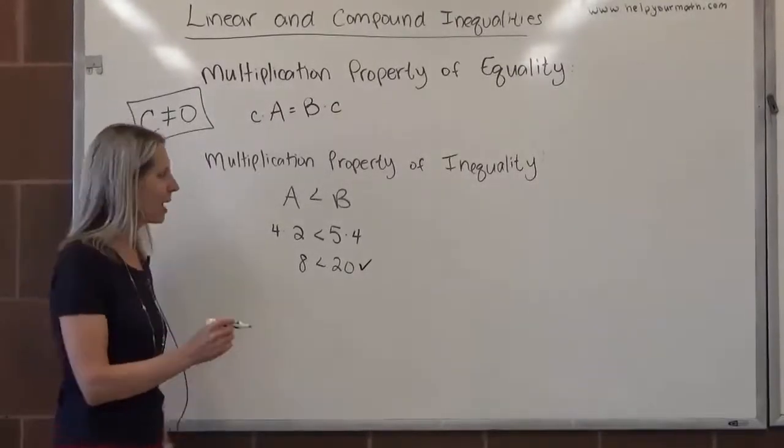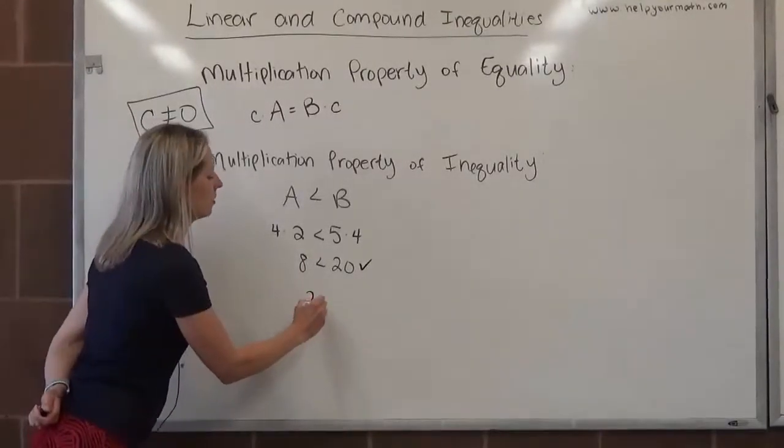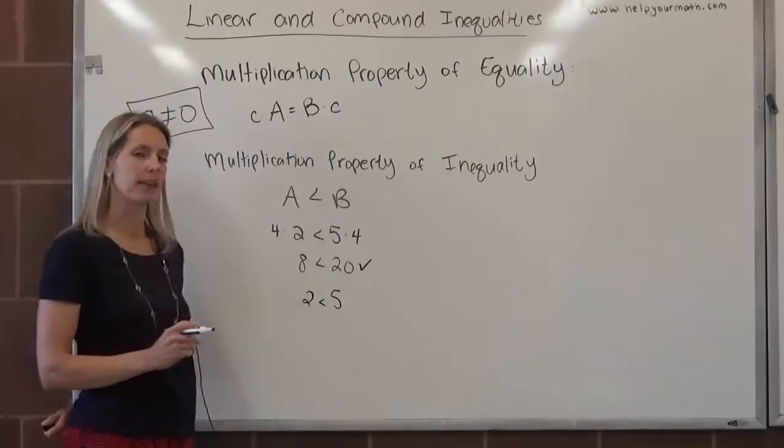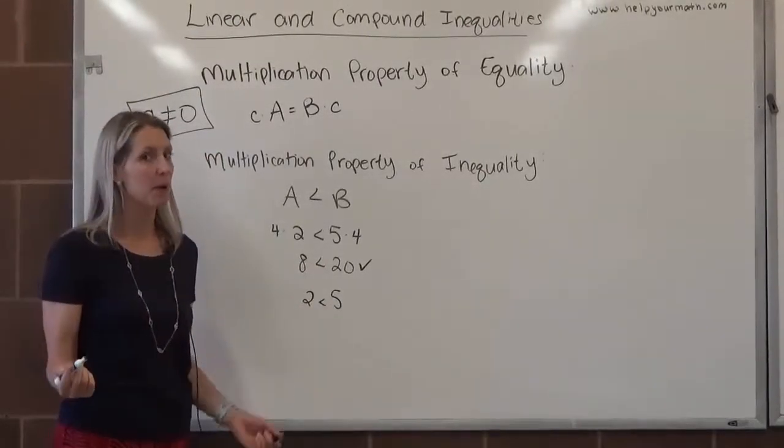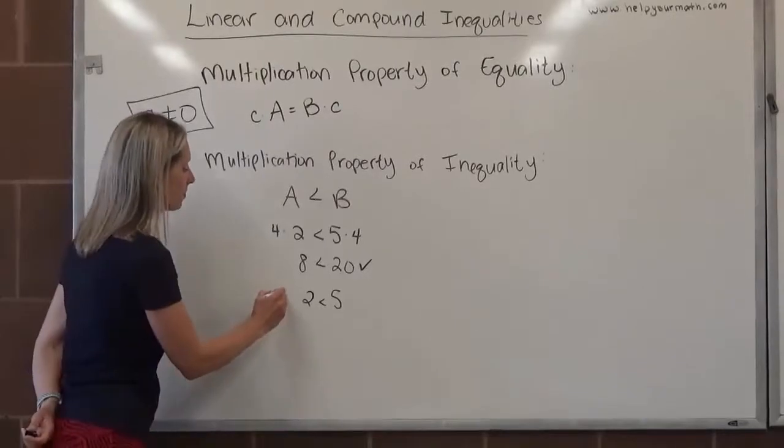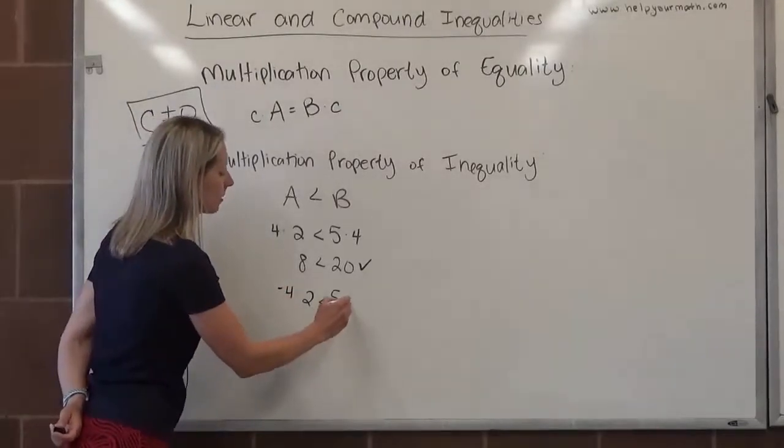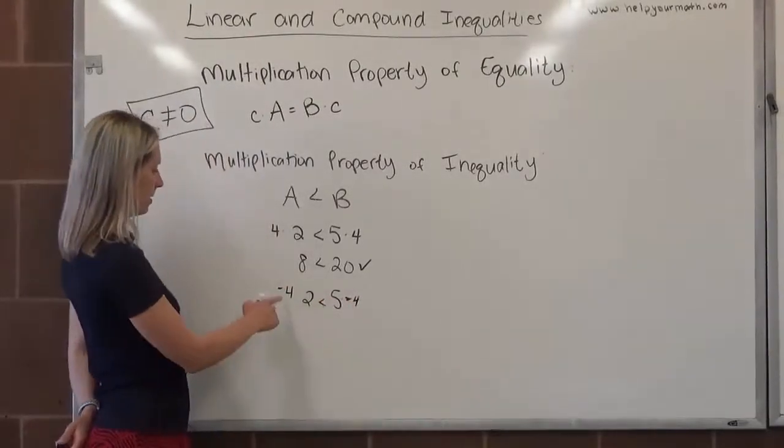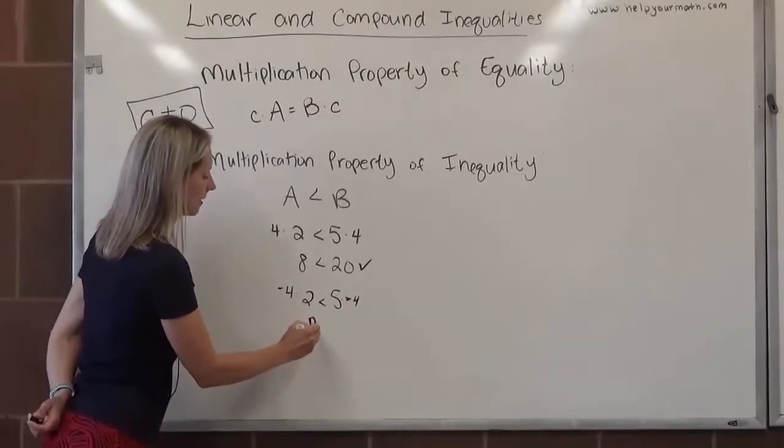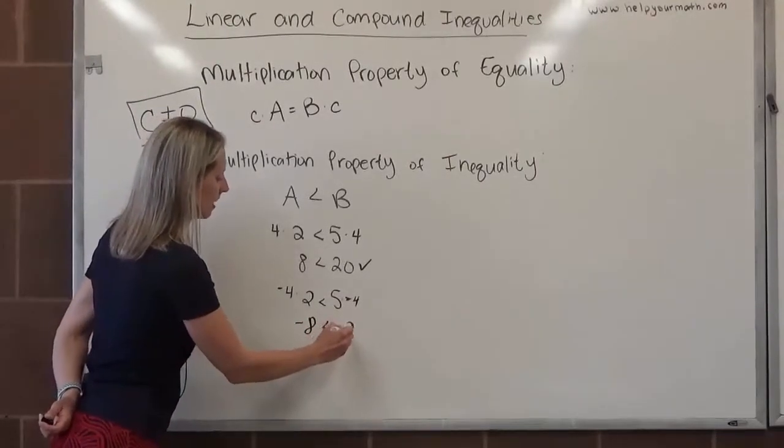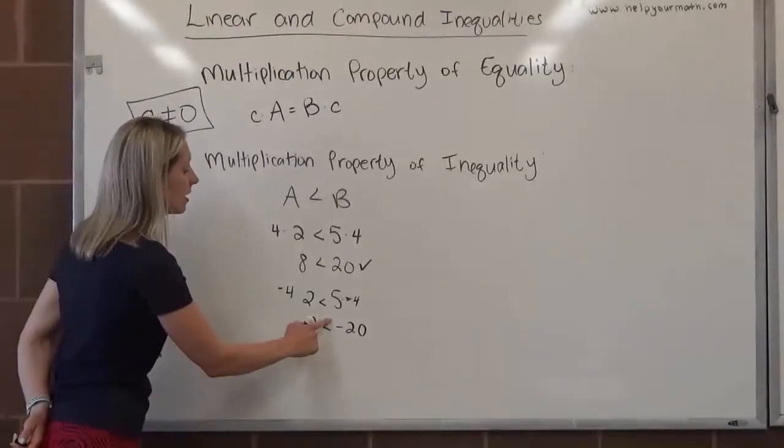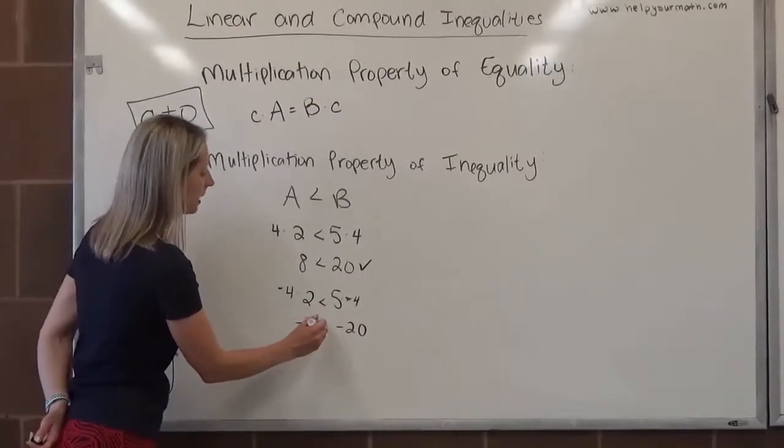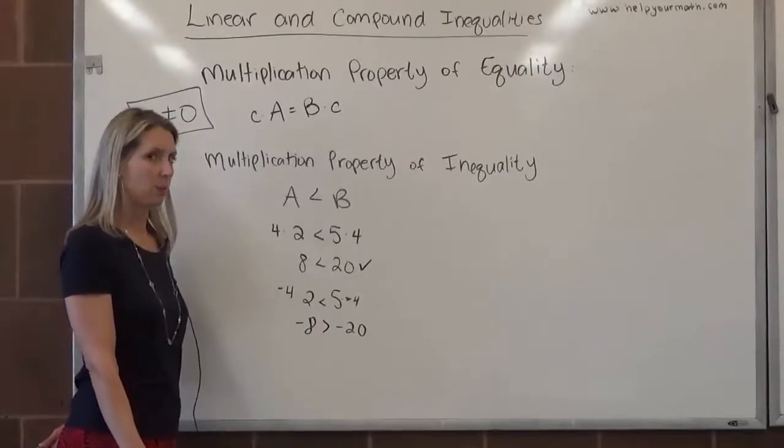Will it always hold up? I don't know. I mean, I do know, but for the sake of this video, let's pretend like I don't. All right. Two is less than five. Now this time let's multiply by negative four. What happens when we multiply both sides by negative four? We get negative eight is less than negative. Wait a minute. Negative eight is not less than negative 20. Negative eight is greater than negative 20.